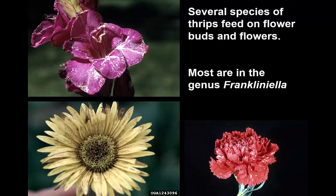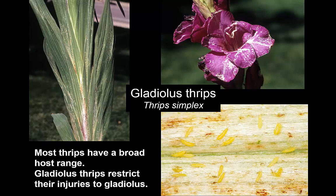There is one exception — a thrips associated with flowers that is in a different genus — and that's the Gladiolus thrips. Gladiolus has its own thrips. And although most thrips have a broad host range, the Gladiolus thrips is pretty much just associated with Gladiolus. So if you have a chronic situation on that plant, that's the critter.